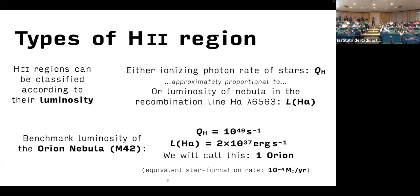This is also often quantified in terms of the star formation rate. A Orion is taken to correspond to 10 to the minus 4 solar masses a year.